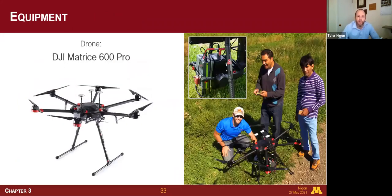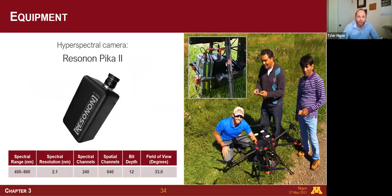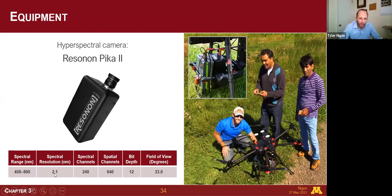For image capture, we used a DJI Matrice 600 Pro drone with a Resonon Pika 2 hyperspectral camera, a flight computer, solid state drive, inertial measurement unit, and GPS, all mounted on a gimbal. The GPS and IMU are used to geo-reference the imagery. The hyperspectral camera was sensitive to both visible and near-infrared light — extending beyond the red, green, and blue of normal cameras — with 240 spectral bands across 240 different channels, compared to just three channels in a standard cell phone camera.